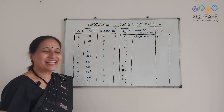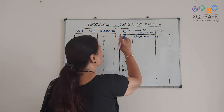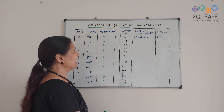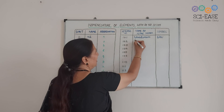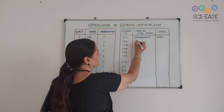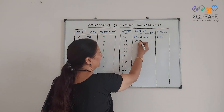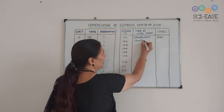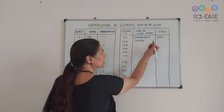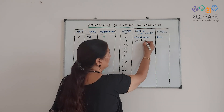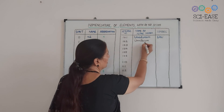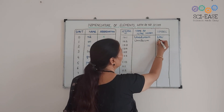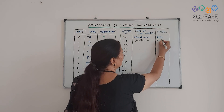This is very easy. For element 102: digits are 1, 0, 2. For one we write 'un', for zero 'nil', and for two 'bi'. Adding the suffix '-ium' gives 'Unnilbium'. Note: you can skip one 'i' where two vowels meet. The symbol is formed from the first letters: U, n, b — giving 'Unb'.